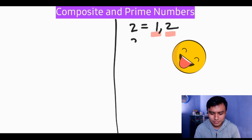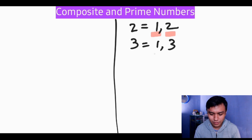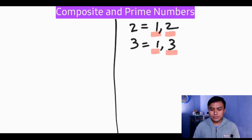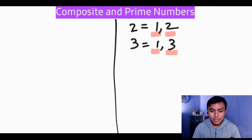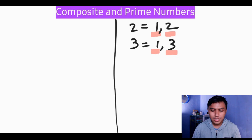The factors of three are one and three — it has exactly two factors: one and the number itself. Let's move to the next number, which is four.